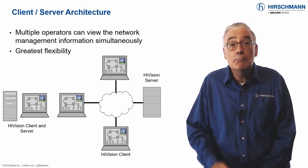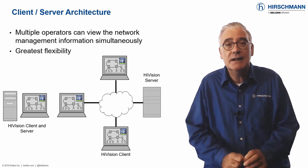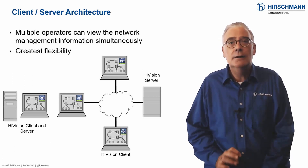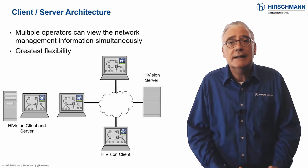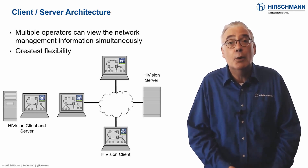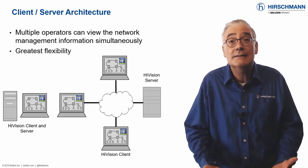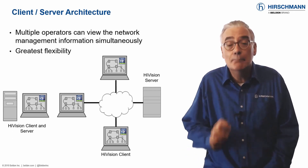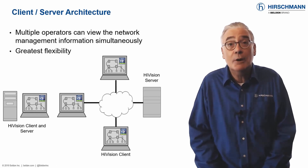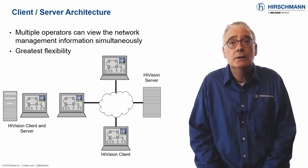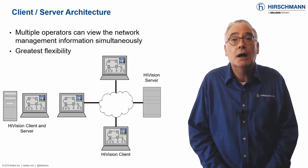For larger installations, multiple clients running on separate devices can access the same server simultaneously. This provides many advantages. Industrial operators can supervise their own network segment. Faults can be propagated to multiple clients, ensuring they are noticed more quickly. A network can be monitored locally and remotely at the same time. If you have a larger network, take advantage of the client-server architecture.